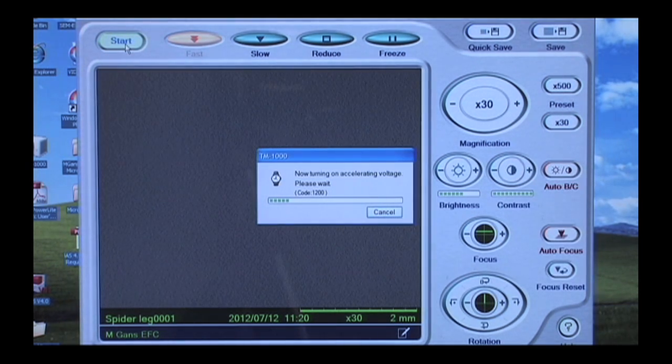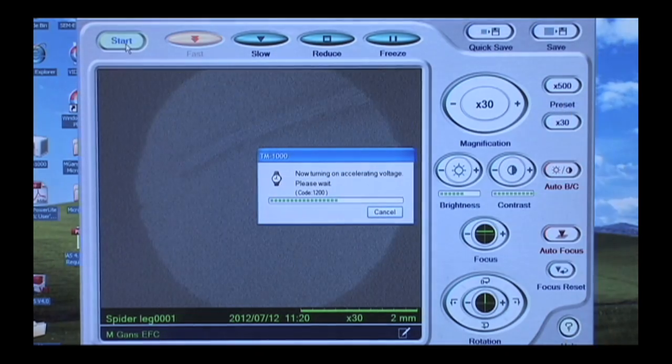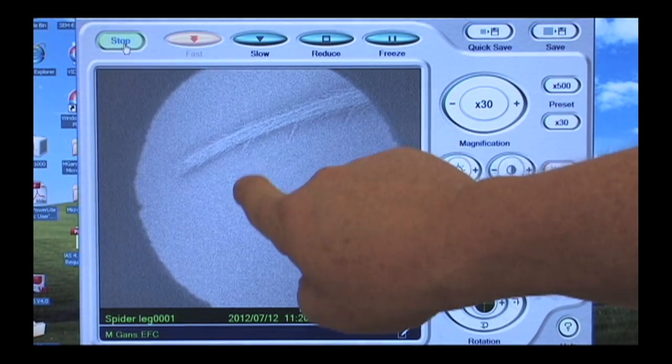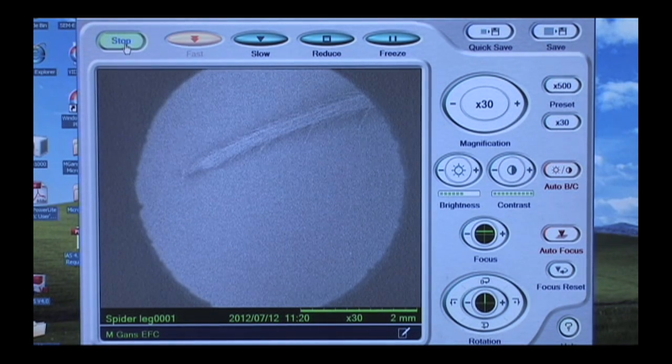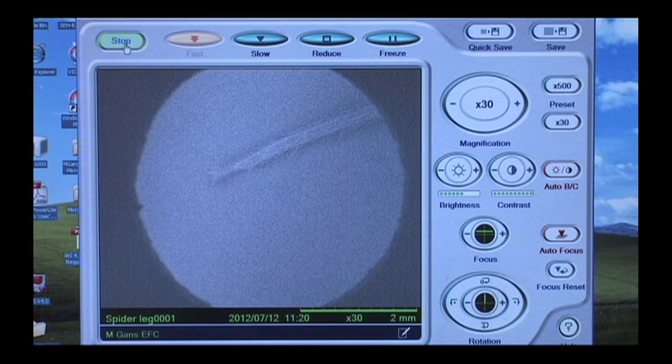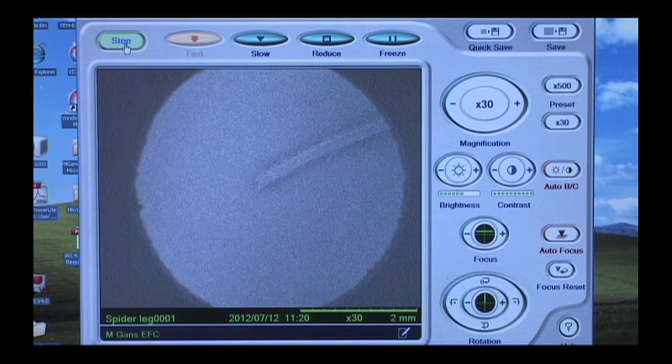The computer's going to do some adjustment to find our first image. It takes just a second. And there we have a spider leg. You see our spider leg right there, some spines coming off. We'll use the knobs now to move the end of the spider leg into the center of the screen. A little bit more, right there. That'll be perfect.